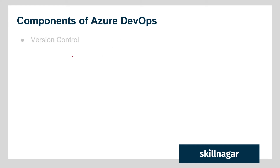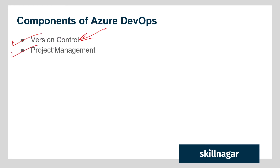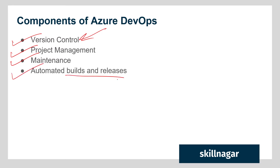Now let's understand the components of Azure DevOps. First, it has version control — this is the very basic thing, the oxygen of Microsoft Azure DevOps. Second, it is a project management tool, so you can manage your whole project inside Azure DevOps. Third, maintenance — bug fixes and new feature releases can be handled through it. It also supports automated builds and releases, and finally quality assurance testing, so whatever standards you have set for your software can all be done inside the Azure DevOps environment.